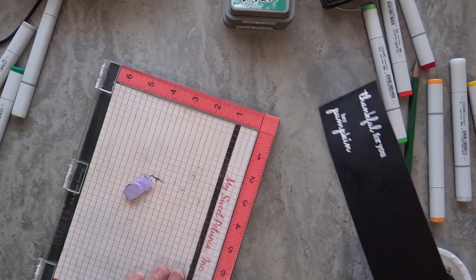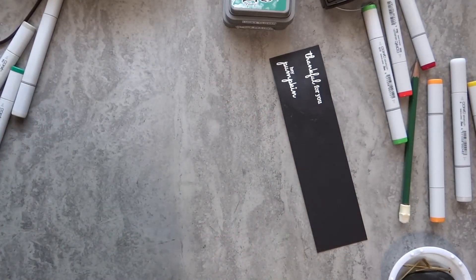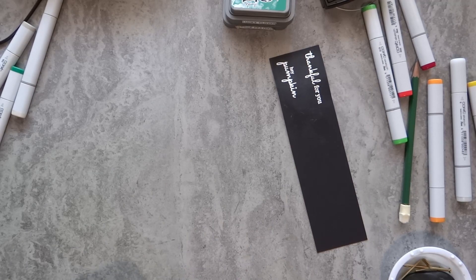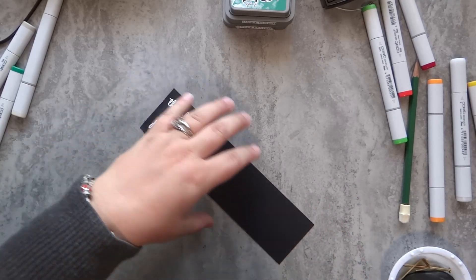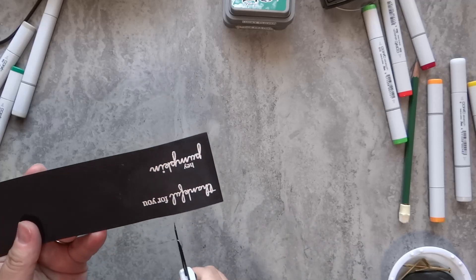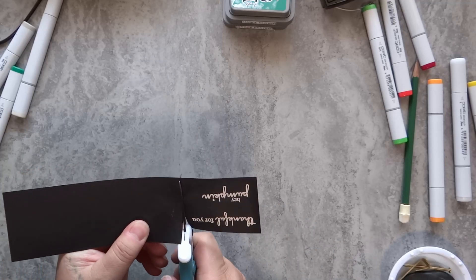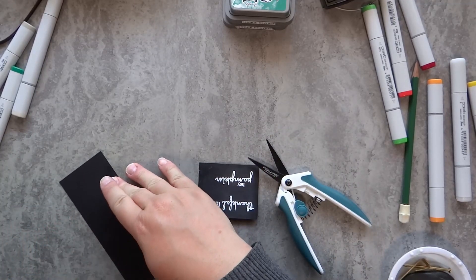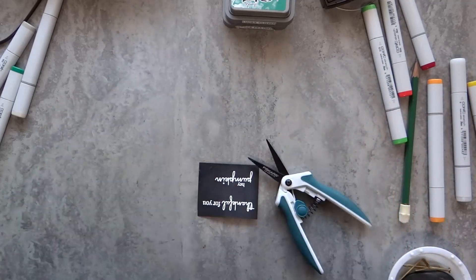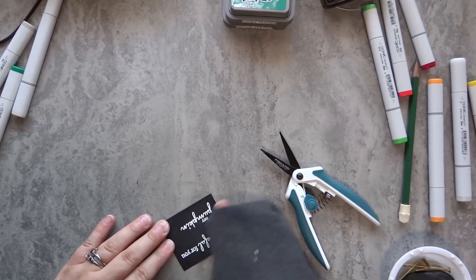While that dries, let's go ahead and get some of those sentiments stamped, embossed, and cut. I'm using black cardstock, Versamark ink, and white embossing powder to stamp out two sentiments from the Hey Pumpkin stamp set. One of them says Hey Pumpkin, which is perfect for this, and the other says Thankful for You.